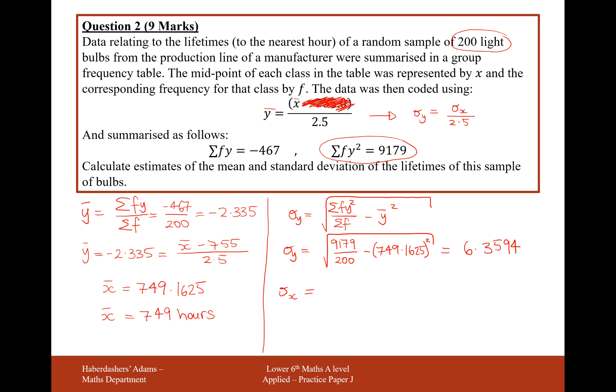We're not going to relocate our data, we're just going to undo that shrinking of the data that happened when we divided all our data points by 2.5. So sigma X equals the standard deviation for Y times by 2.5. So 6.3594 × 2.5, and we get 15.8986. Round that to three significant figures, and we get 15.9.